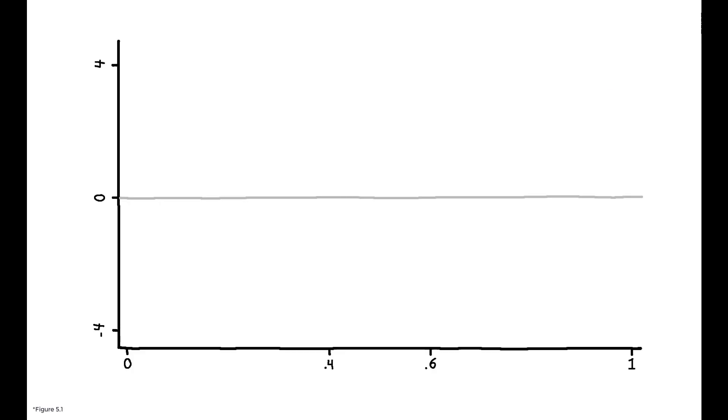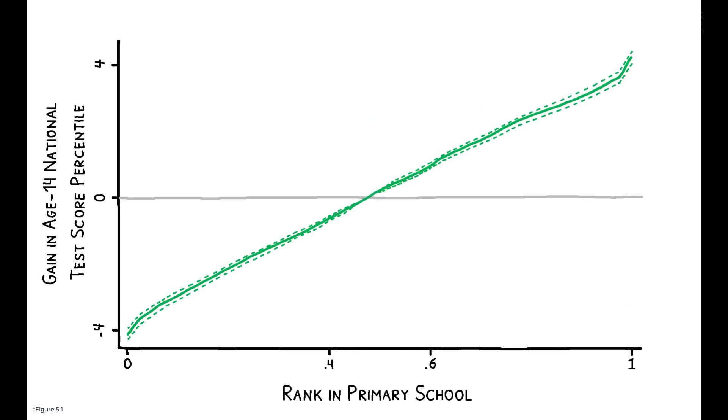Interestingly, the effect of rank on academic performance is essentially linear through the rank distribution. The results are not just driven by students who rank at the very top or very bottom of their class.